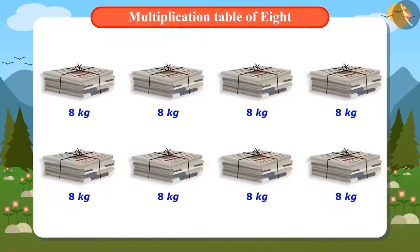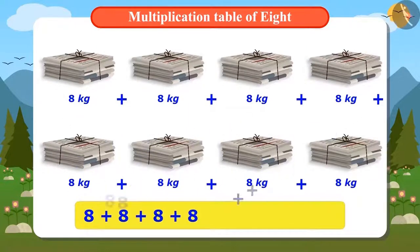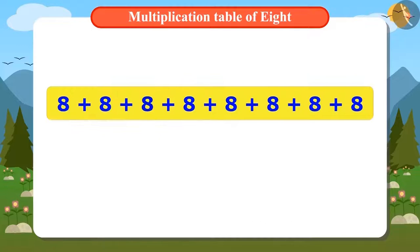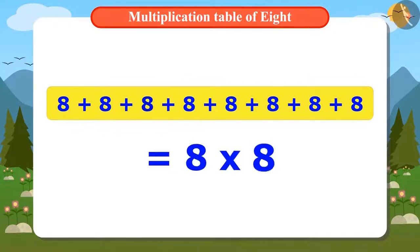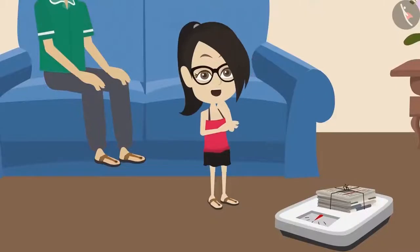To find out how many kilograms of newspaper there are, we add the weight of all the newspapers. That is, we add 8 eight times. Adding 8 times 8 will give us the same answer as multiplying 8 by 8. But to solve this, I should know the multiplication table of 8.